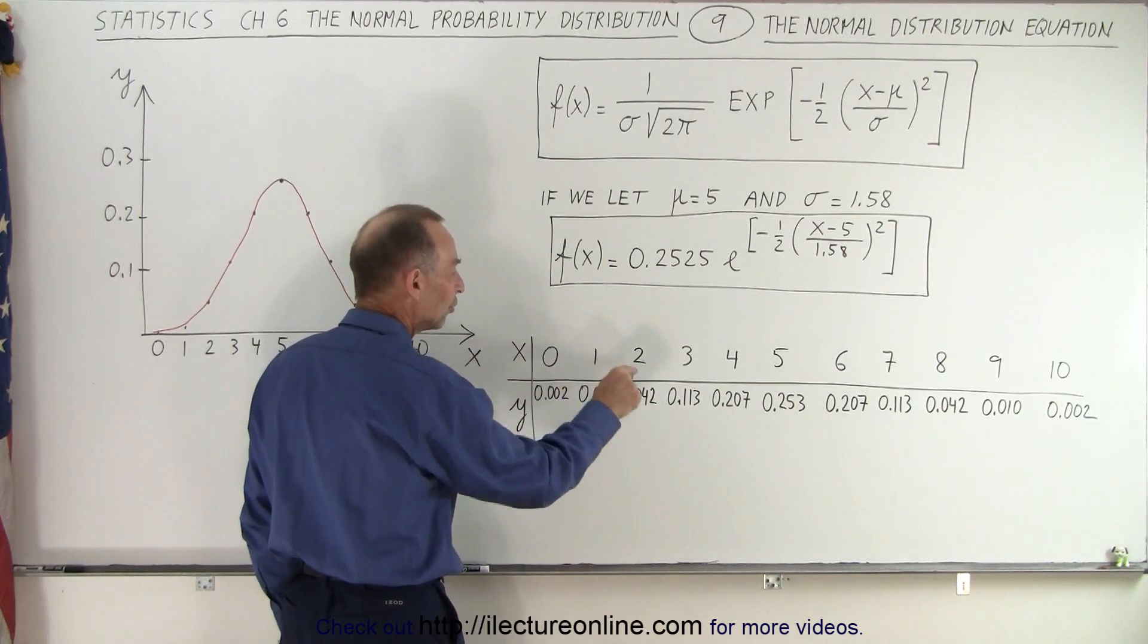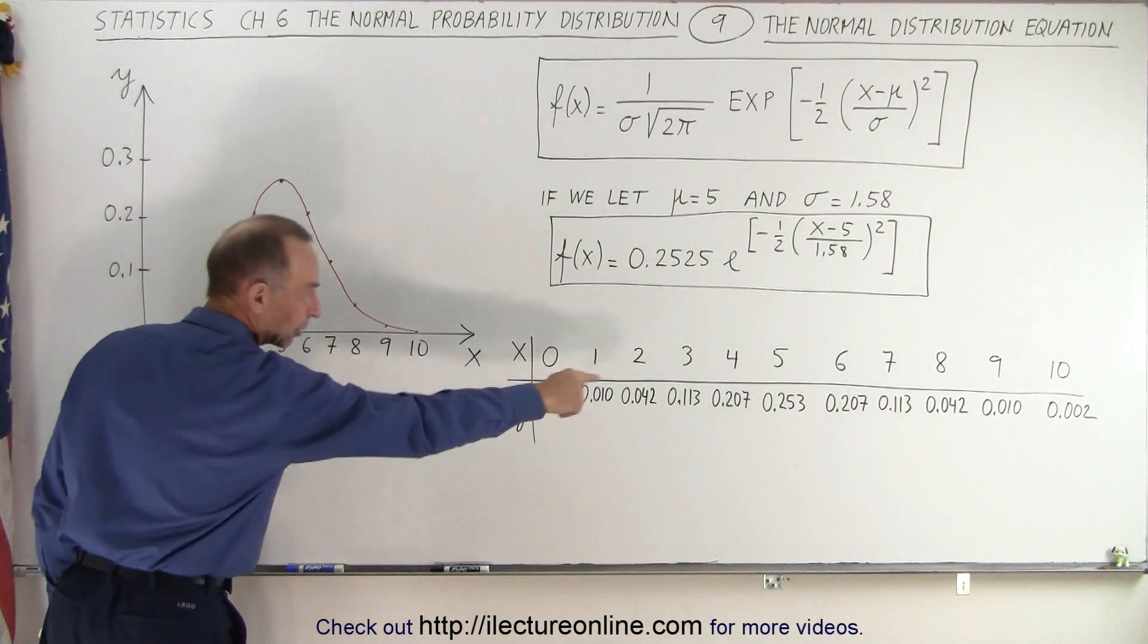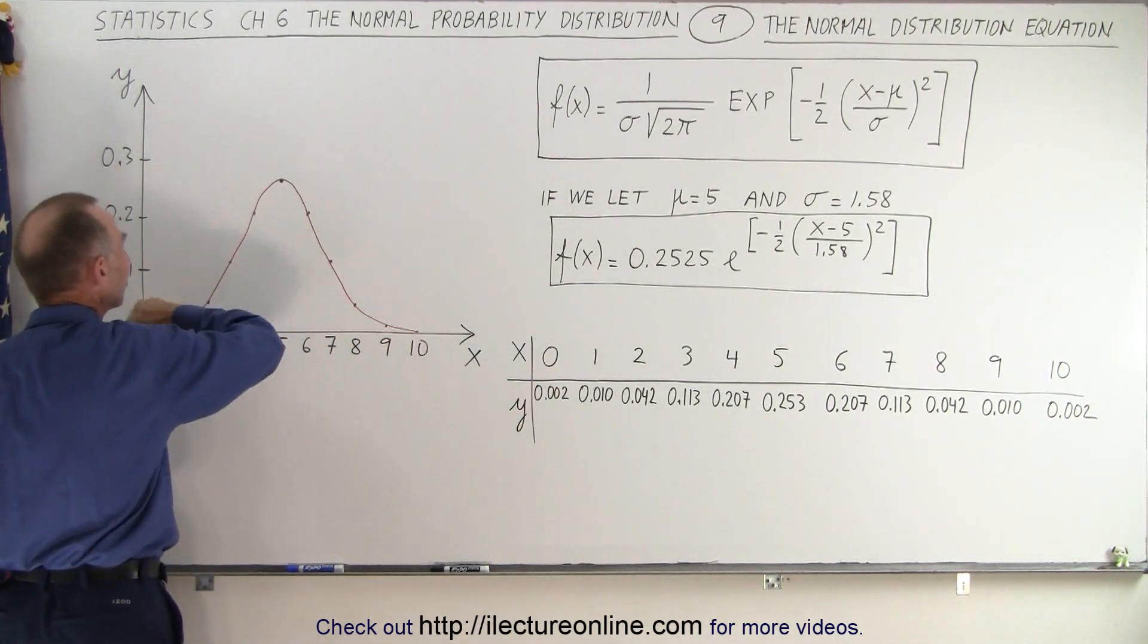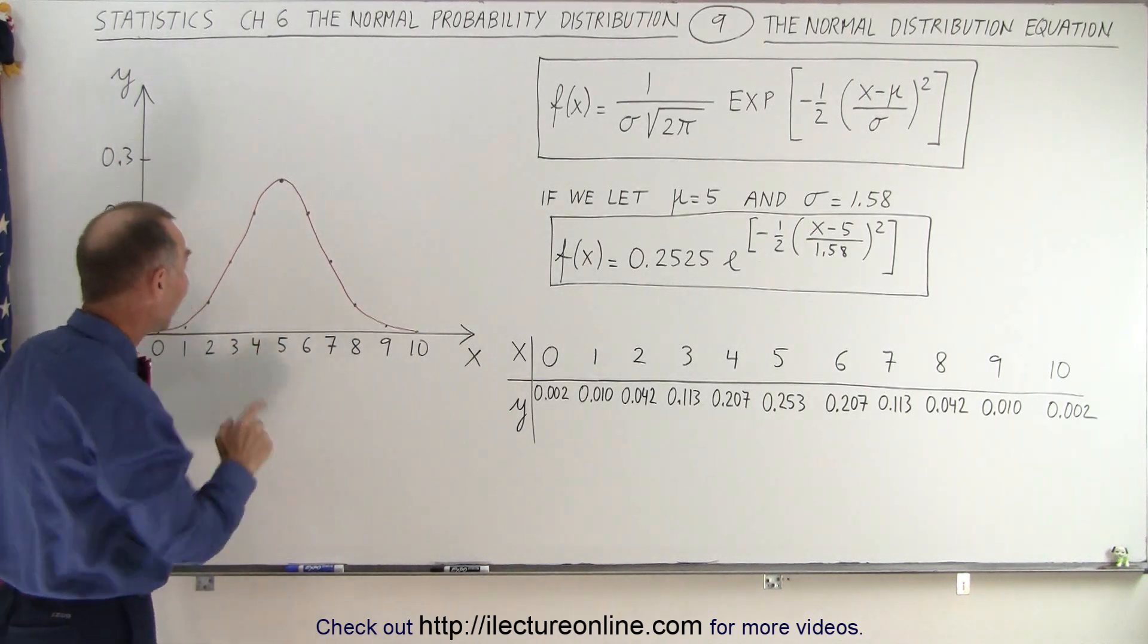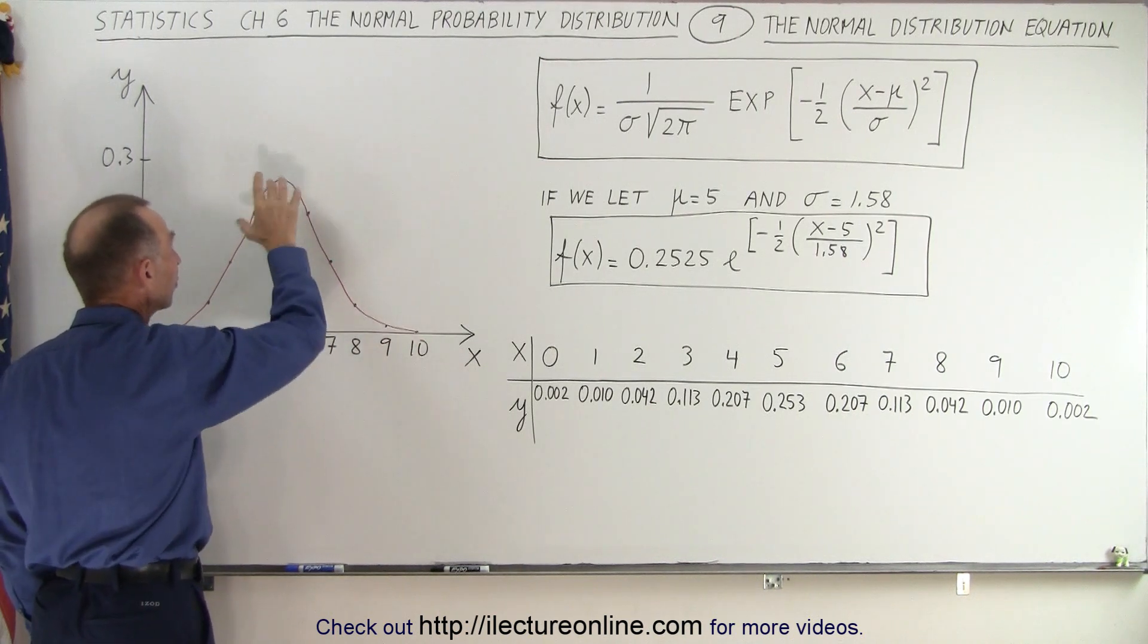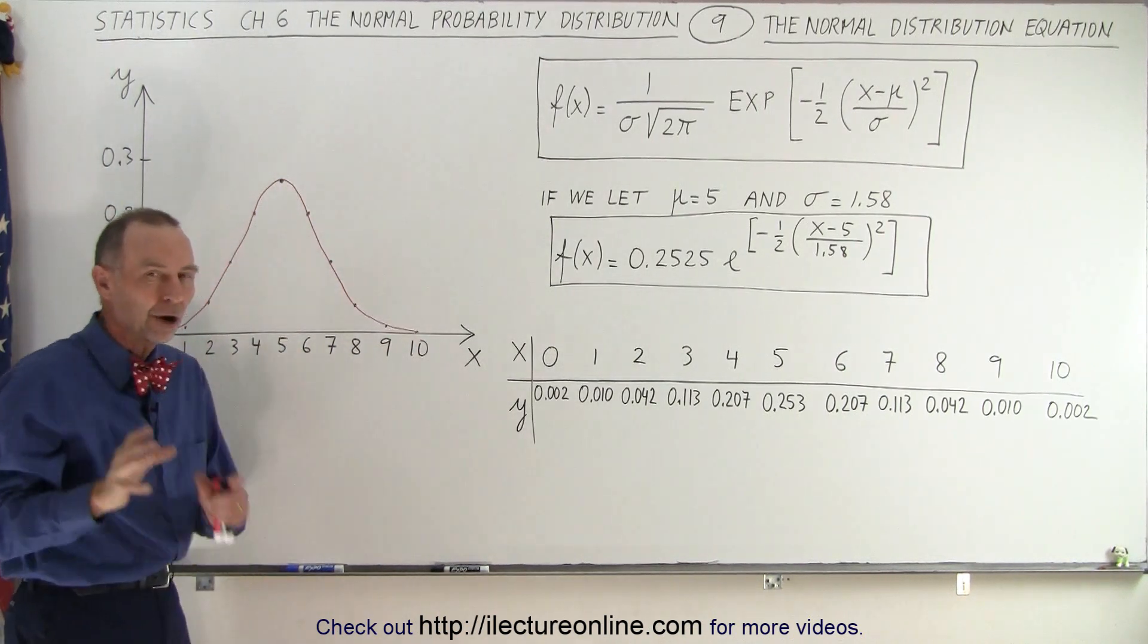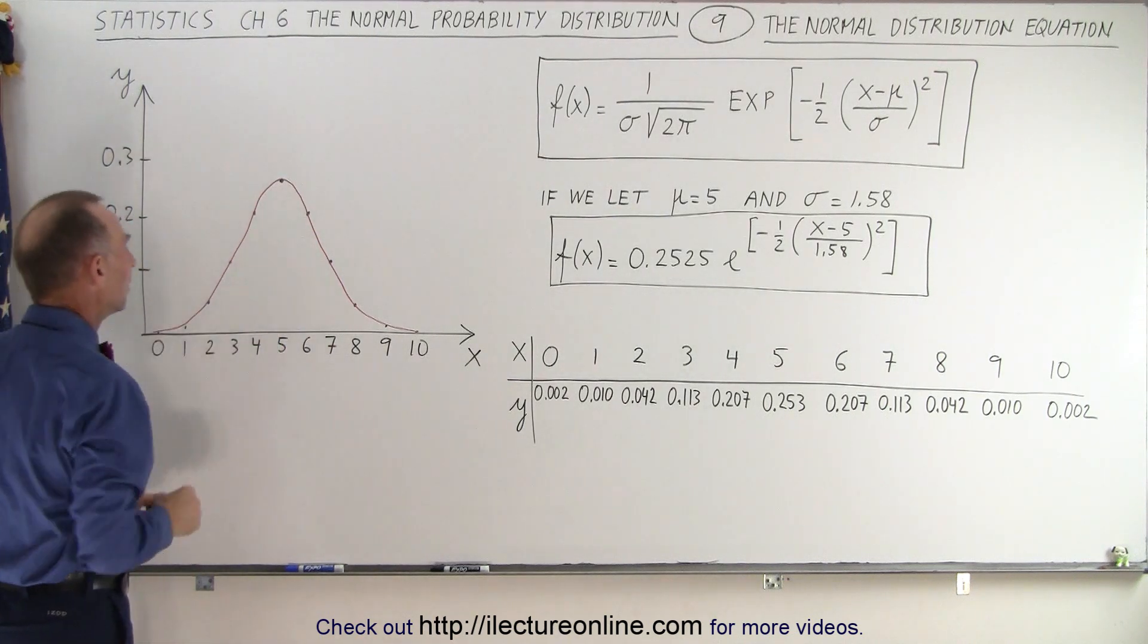If we now plot those points for anywhere from zero baskets made to 10 baskets made, and we plot the points available, this then gives us that very familiar graph. But now, this graph, what it means, is that the height at various baskets represents the probability of shooting that many baskets.